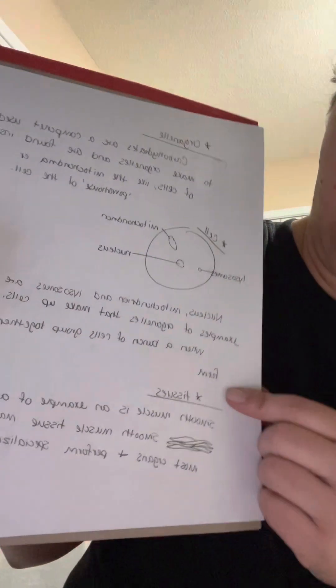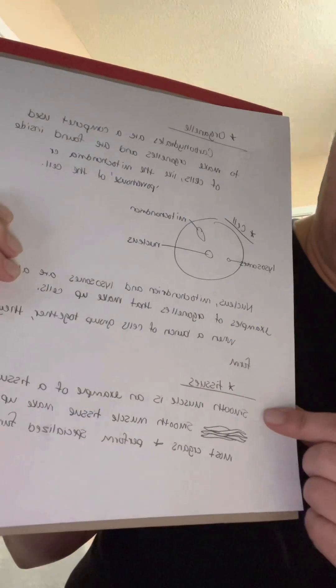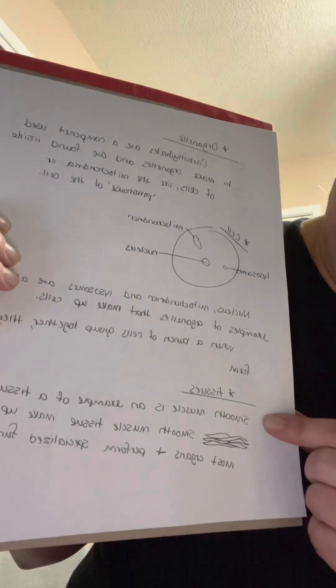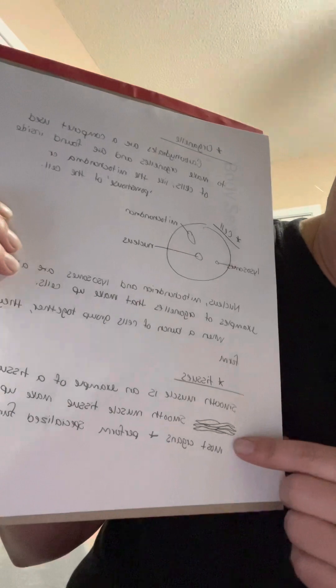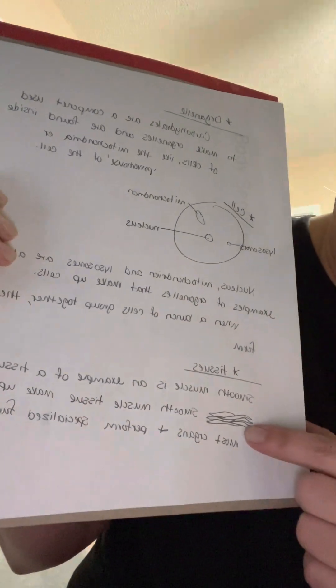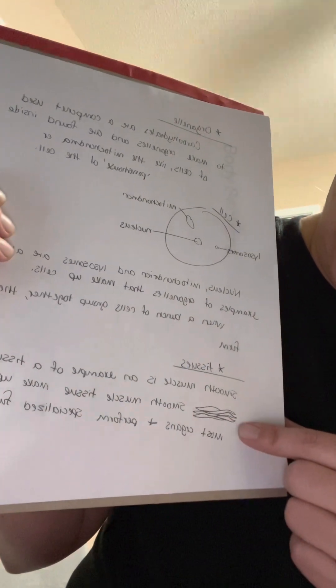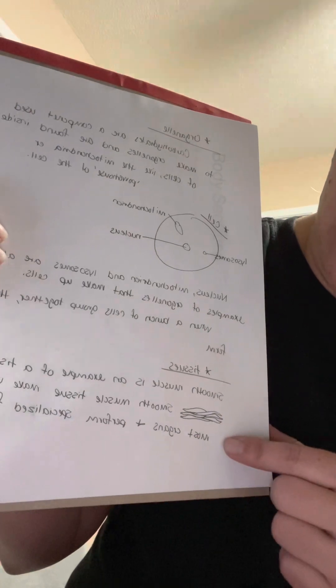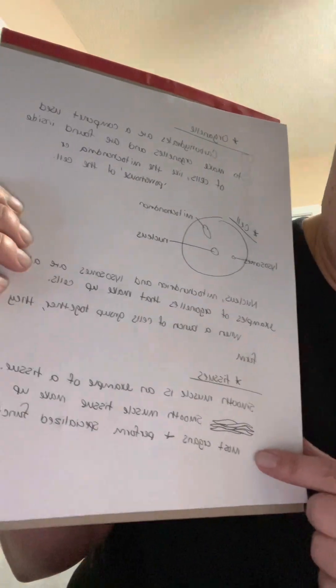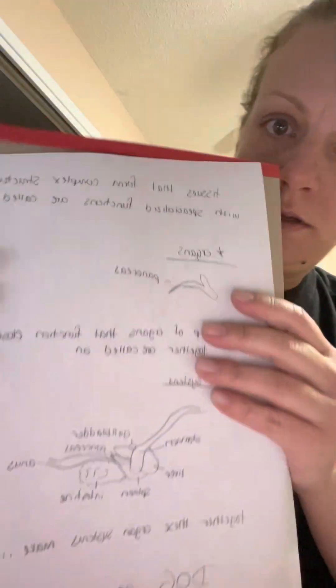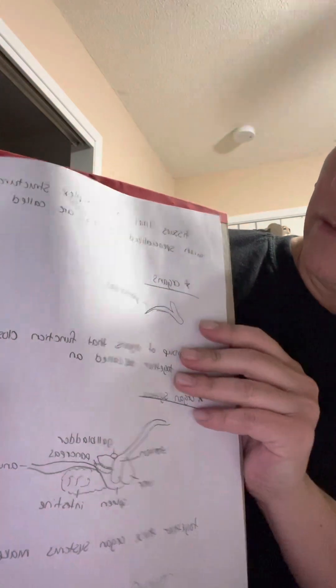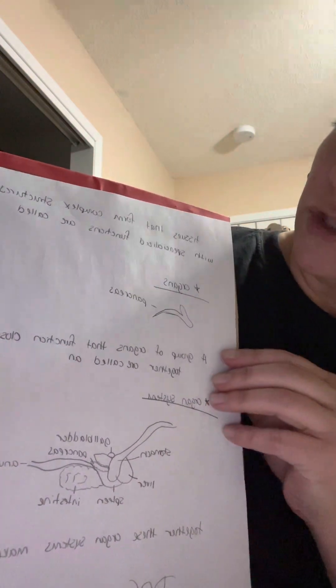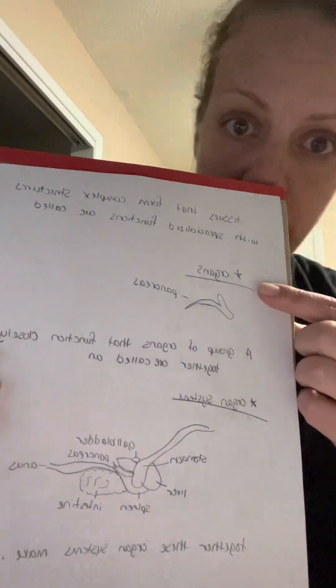When a bunch of cells group together they form tissues. An example of a tissue is smooth muscle. Here's my smooth muscle. Those smooth muscle tissues make up most organs and perform specialized functions. Tissues that form complex structures with specialized functions are called organs.